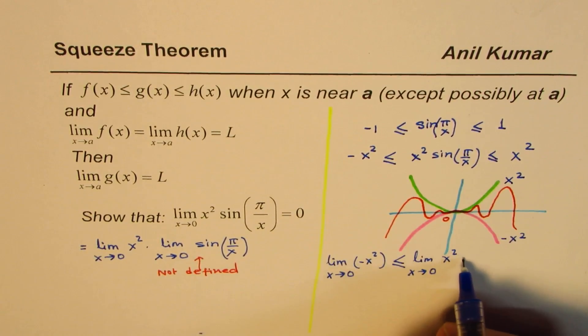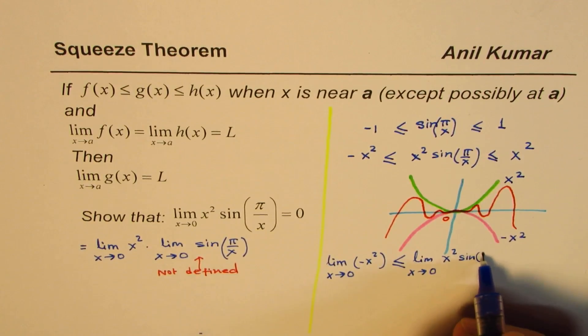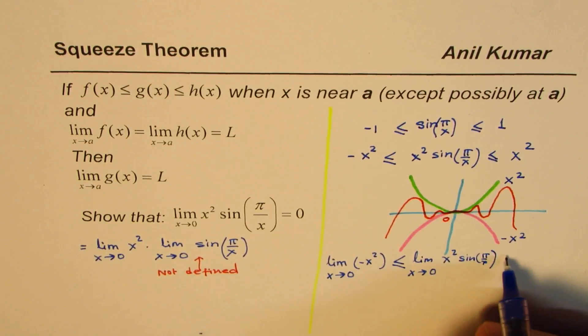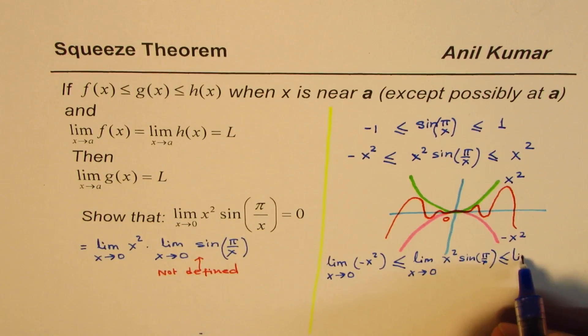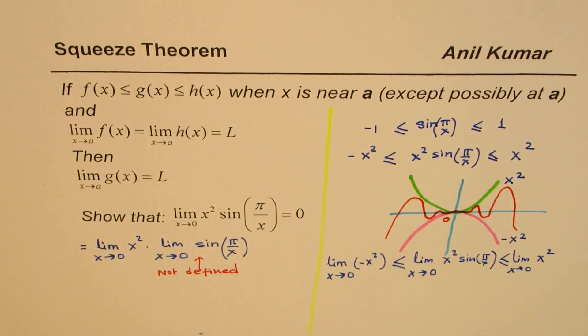Limit when x approaches 0 for -x², should be between limit when x approaches 0 for x² sin(π/x), and should be less than limit when x approaches 0 for x².